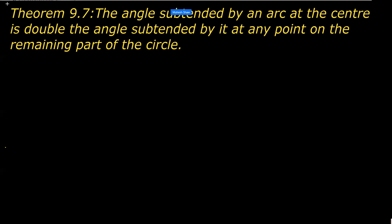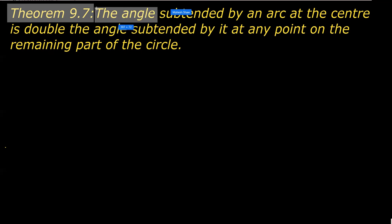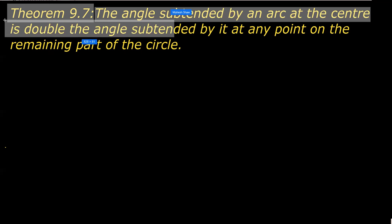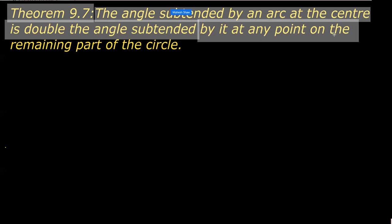In this video, I'm going to explain the proof of theorem 9.7, also known as the alternate segment theorem. The theorem states that the angle subtended by an arc at the center is double the angle subtended by it on the remaining part of the circle.